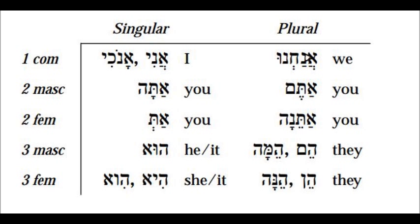Similar to English, Hebrew independent personal pronouns, or referred to as IPPs, are written as separate forms when used as the subject. When the Hebrew personal pronoun functions as the object, it appears as a suffix attached to the noun, verb, or preposition.